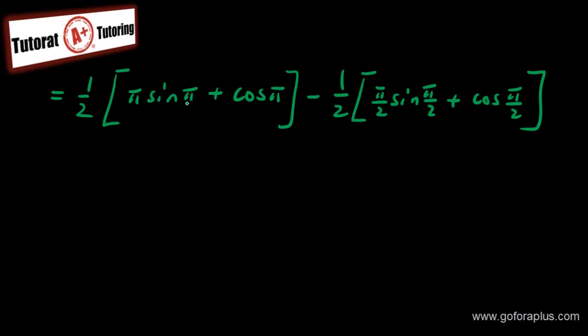I know that sine of pi, this is going to be 0. So this is 0. Cos of pi, this is going to give me minus 1. Again, cos of pi over 2, this is 0. Sine of pi over 2 is going to give me 1. So I have minus a half here. Subtract a half times pi over 2, which is minus pi over 4. And this is basically my answer.